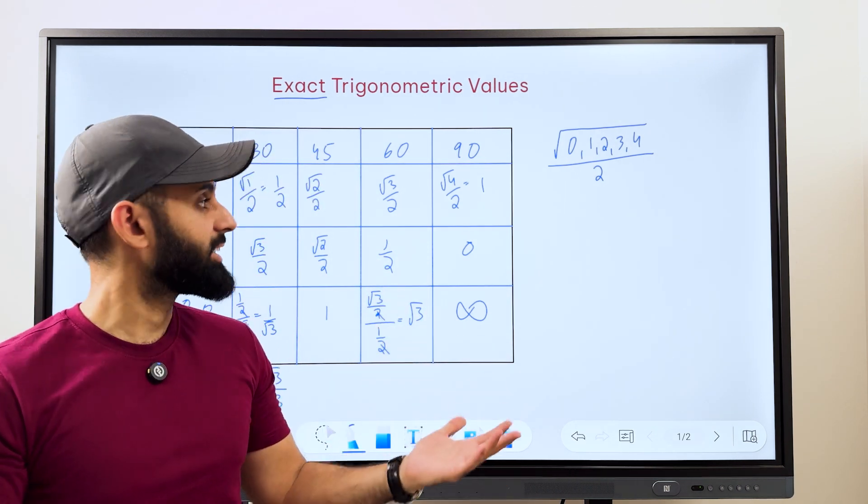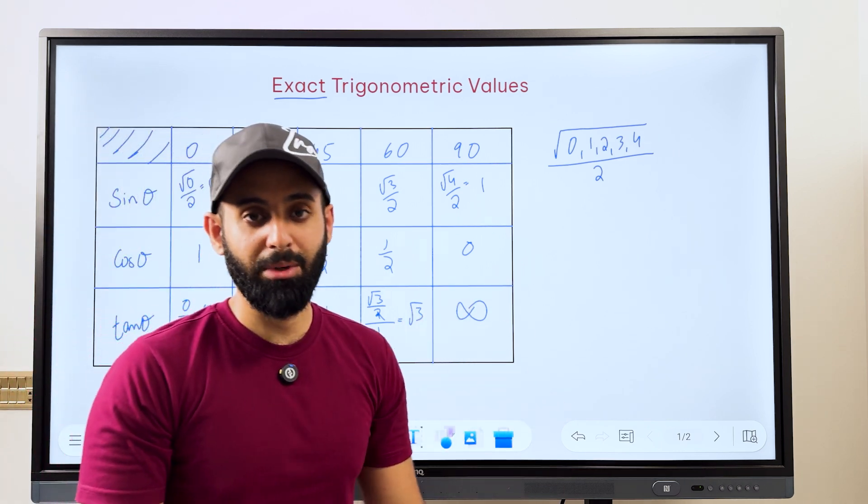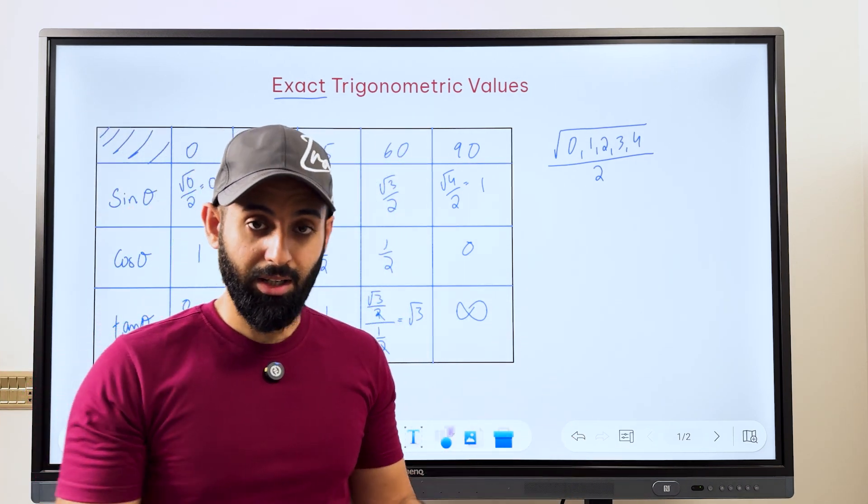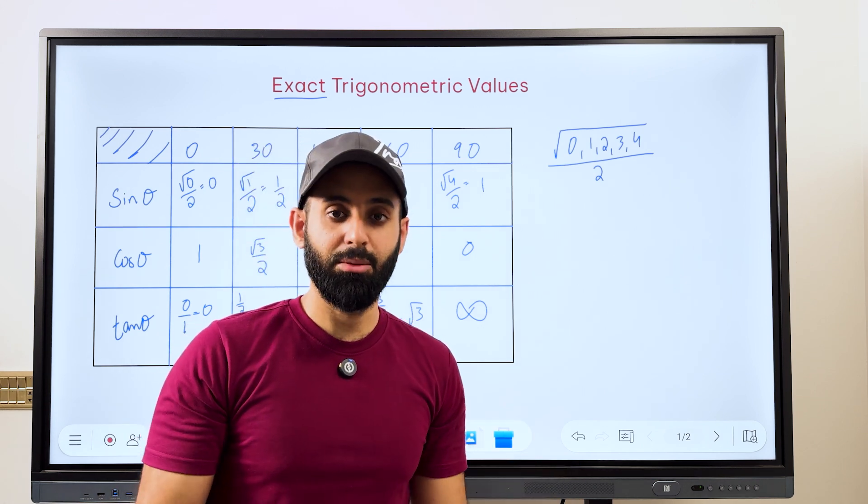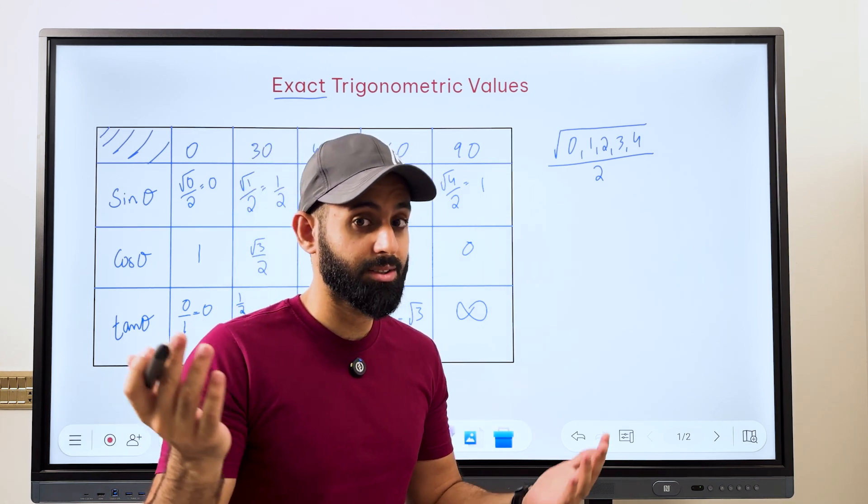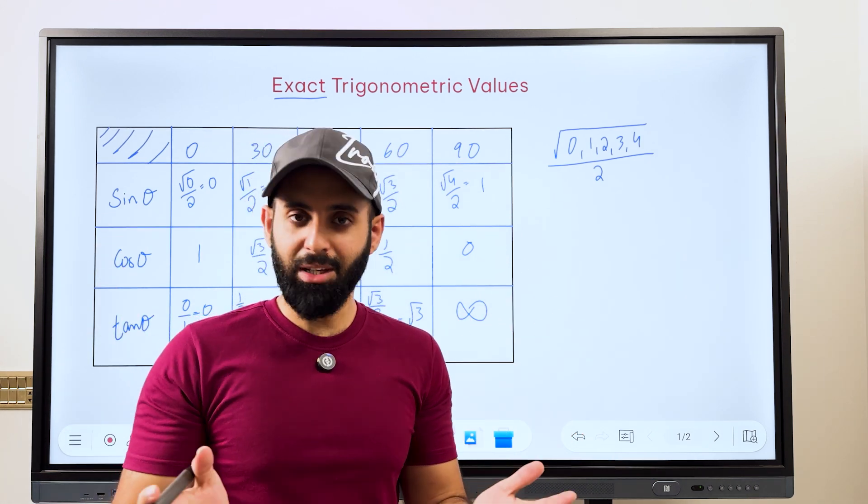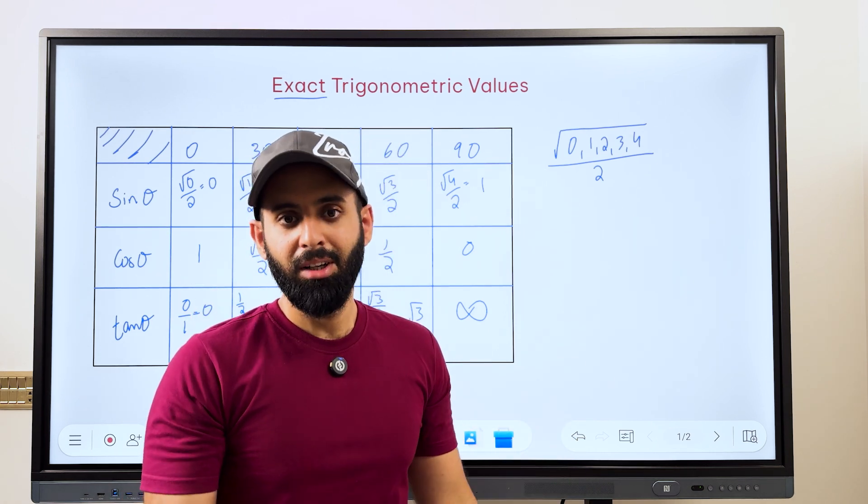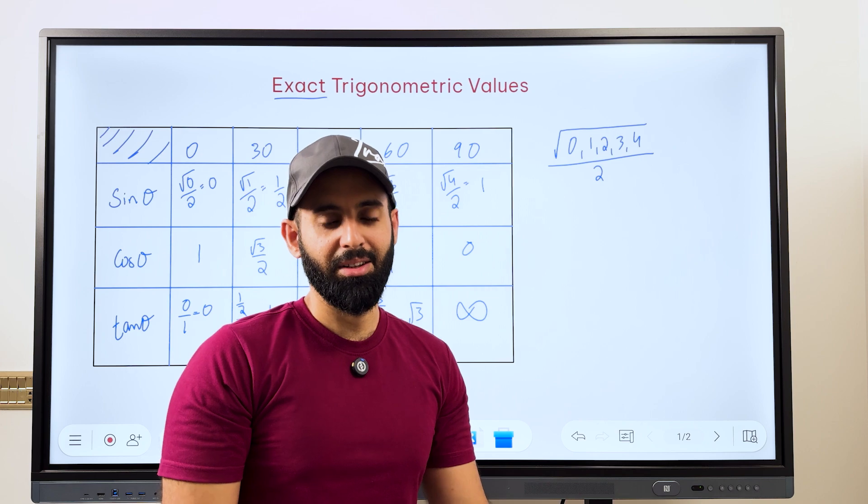So tan 90 is infinity. And that's it. That's the end of this video. And this is how you can memorize exact trigonometric values. I hope this helped. And if it did, do leave a like and make sure to share this video with your friends, classmates, and whoever you think could possibly benefit from it. And if you haven't subscribed to the channel, make sure to do so. So I'll see you guys in the next video. Until then, take care. Bye-bye.